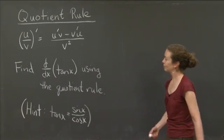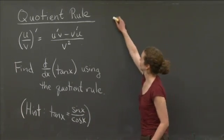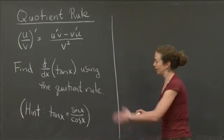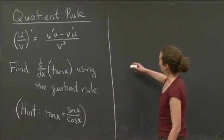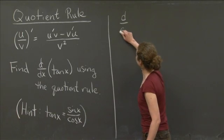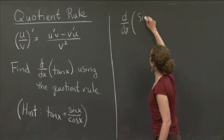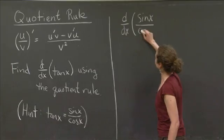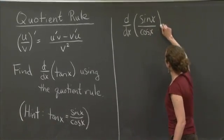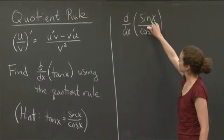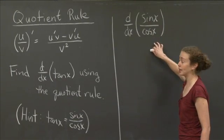Okay, so we want to find the derivative of tangent x. Let me work on this side of the board. I'm actually going to take d/dx of sine x divided by cosine x. In this case, sine x is u, cosine x is v.